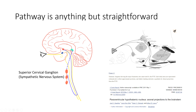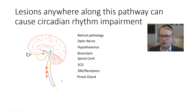A lesion anywhere across this pathway can cause problems and circadian rhythm impairments — whether it's within the retina, the optic nerve, around the hypothalamus, brainstem, spinal cord, the sympathetics, or the pineal gland itself.